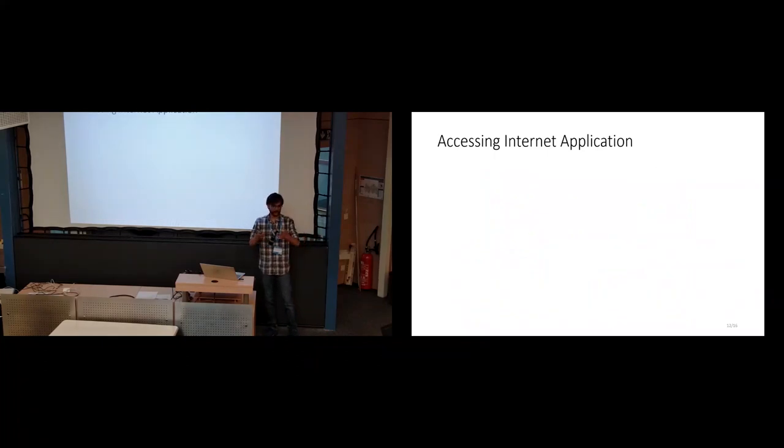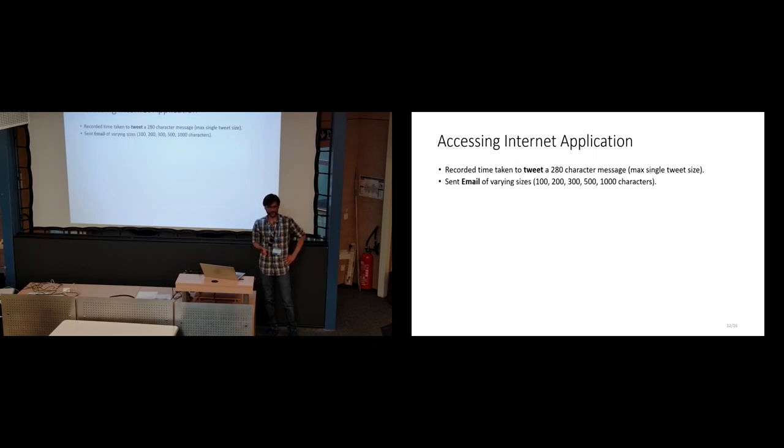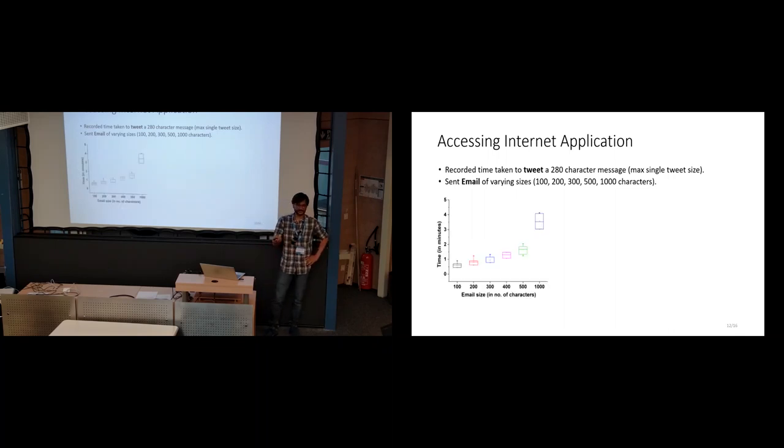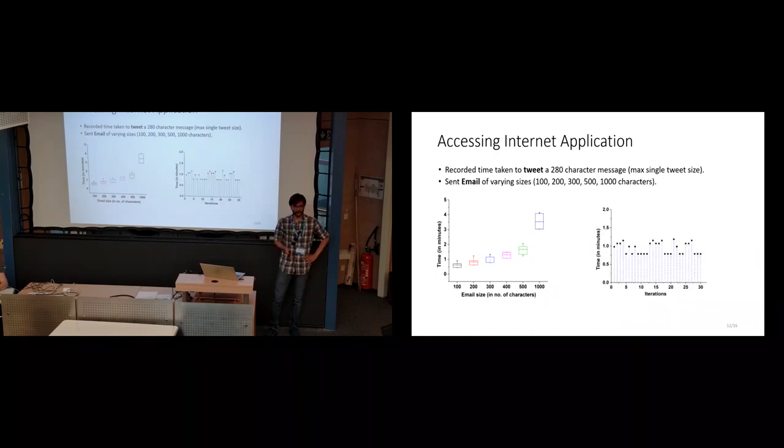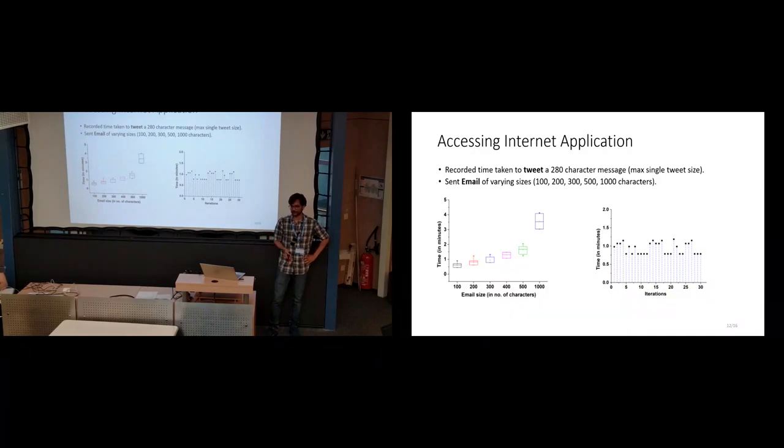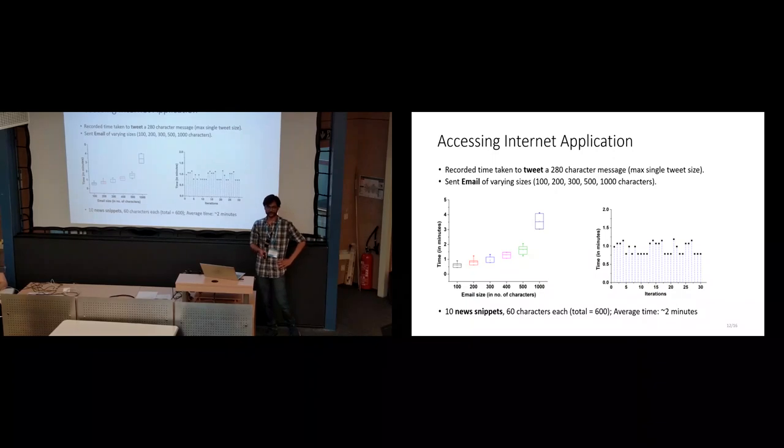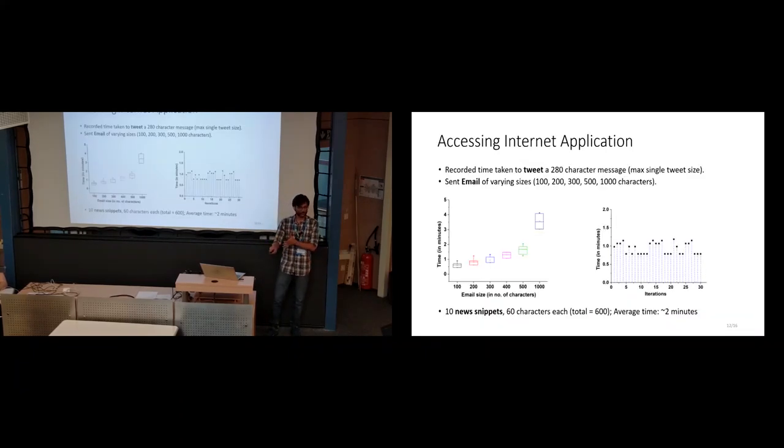We were able to use this to access actual internet applications, such as Twitter and email, and accessing news. We tried to send a tweet and email of varying sizes. A 500 character email was sent in about one and a half to two minutes. And a tweet could be sent using Dolphin in under a minute for most of the cases. Similar was the case for accessing news items.